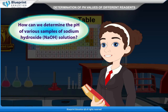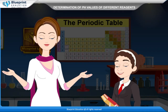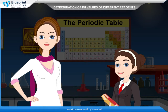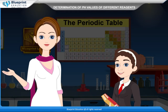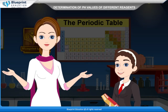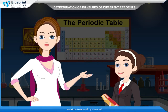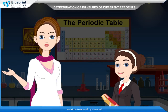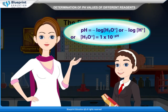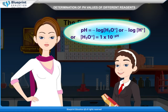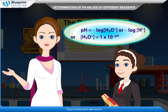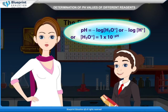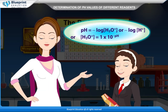How can we determine the pH of various samples of sodium hydroxide NaOH solution? pH means potence hydrogen. This scale was discovered by Sorenson in 1909, and it expresses the hydronium (H3O⁺) ion concentration in a solution. The pH of a solution is defined as the negative logarithm of hydronium or hydrogen ion concentration: pH = −log[H3O⁺] or −log[H⁺], and H3O⁺ = 1 × 10^(−pH).